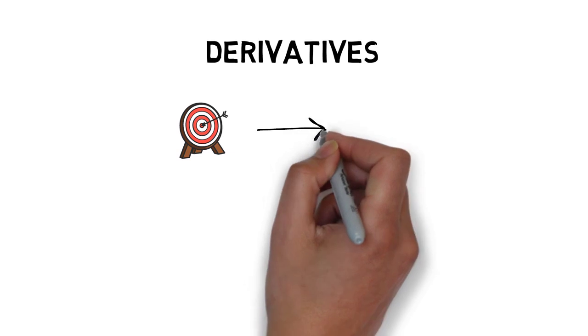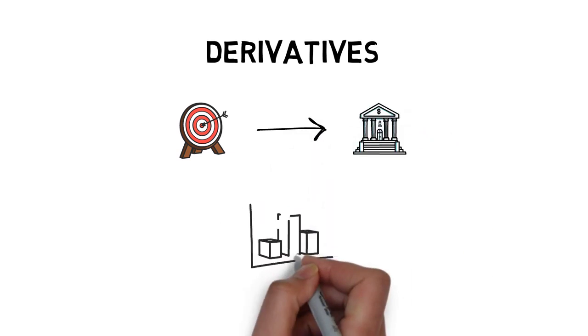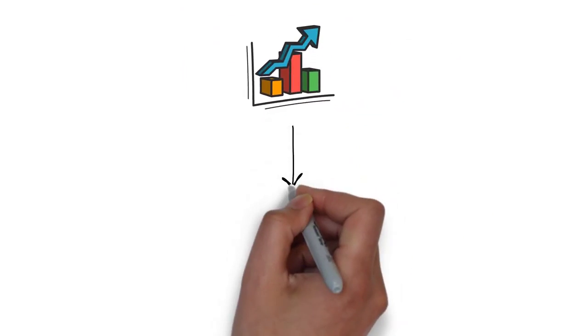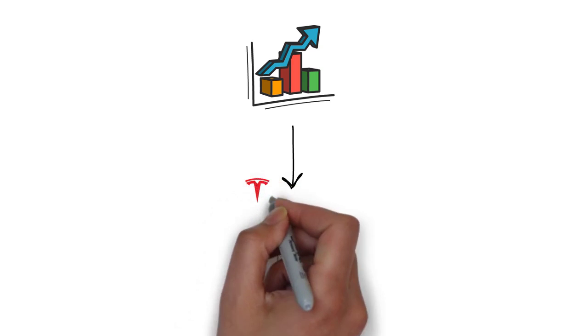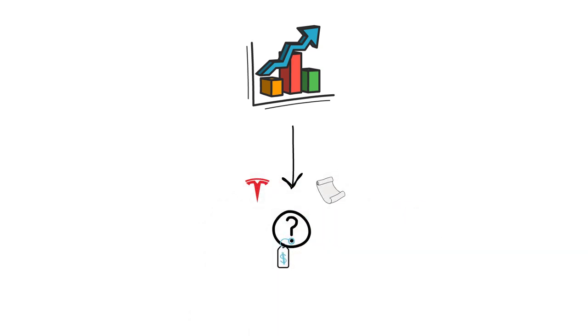Derivatives are one of the key elements of any mature financial system. As the name suggests, derivatives derive their value from something. This something is usually the price of another underlying financial asset, such as a stock, a bond, a commodity, an interest rate, a currency or a cryptocurrency.